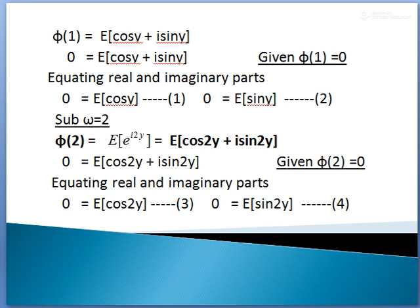Likewise, for ω = 2: φ(2) is equal to E[cos(2Y) + i·sin(2Y)]. The given condition is φ(2) equal to 0. So 0 = E[cos(2Y) + i·sin(2Y)]. Equating real and imaginary parts: real part gives E[cos(2Y)] = 0, and imaginary part gives E[sin(2Y)] = 0.